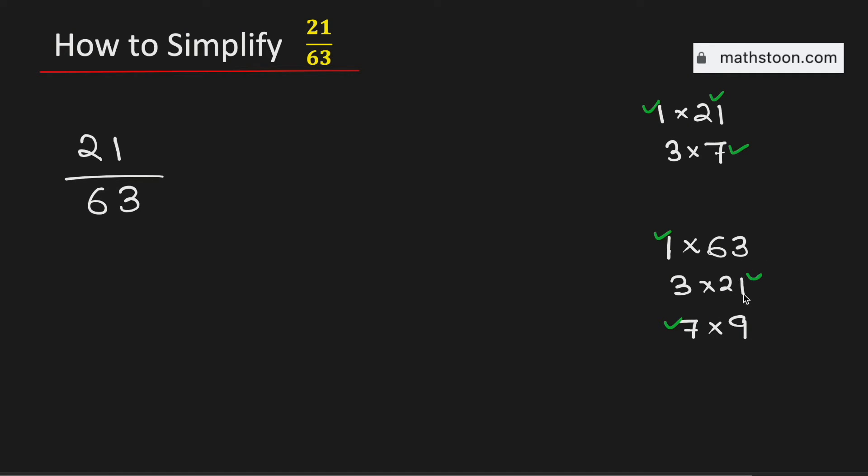Therefore, among the common divisors, see that 21 is the greatest one. That means the greatest common factor of 21 and 63 is 21.